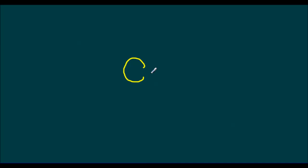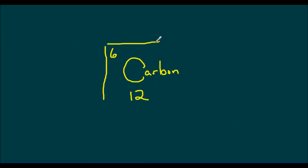So let's start by looking at a very important atom to our biology discussion, and it's carbon. If you look at carbon on the periodic table, you're going to see that it's got a number 6, and it also has a number 12. Its atomic number is 6 and its mass number is 12. That means that carbon has 6 electrons and 6 protons.